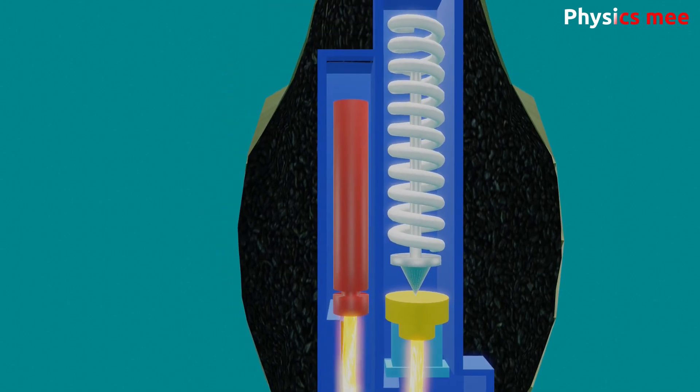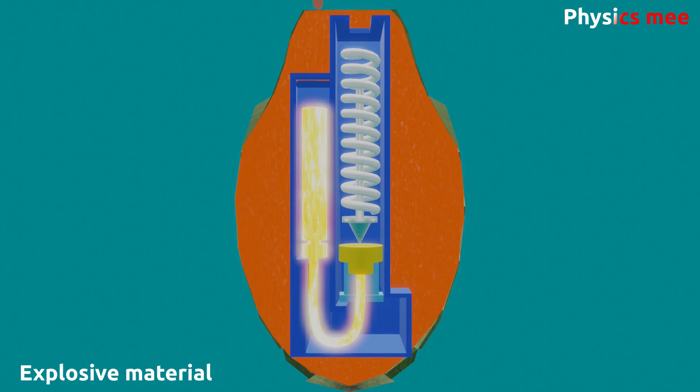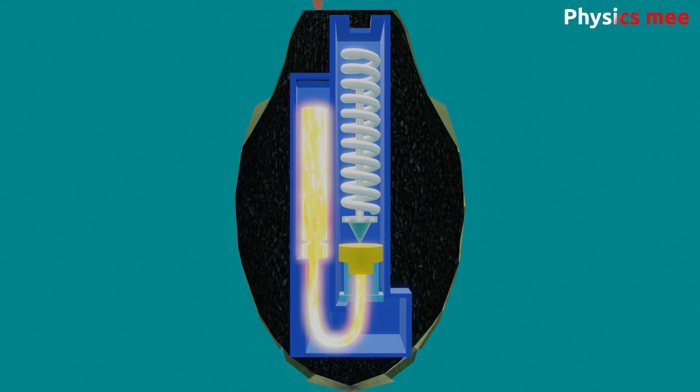The end of the delay element is connected with a detonator. When fire reaches the detonator, it makes a small explosion. This ignites the explosive material present inside the grenade, creating a huge explosion.